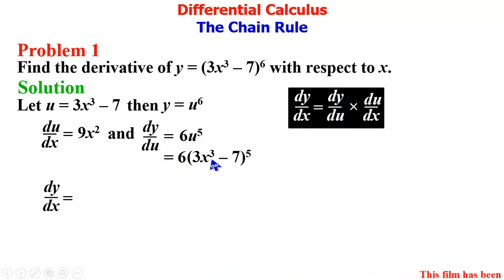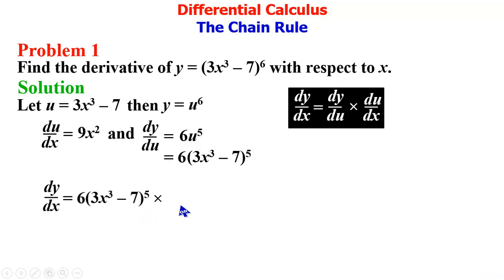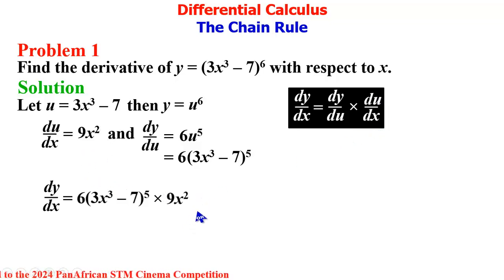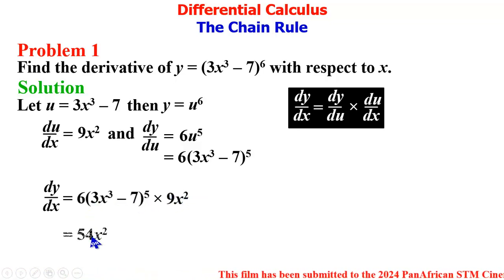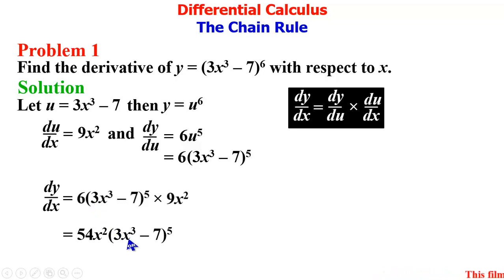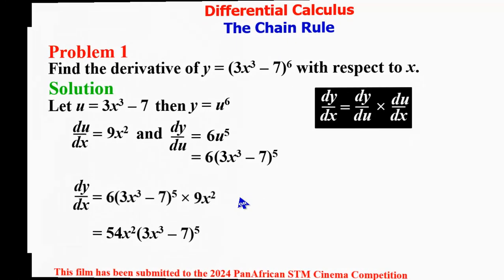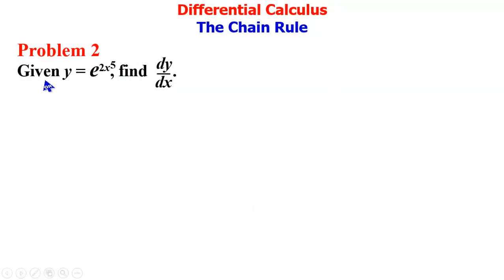Our dy/du is 6(3x³ - 7)⁵ and we multiply by du/dx which is 9x². Simplifying this, we have 9x² × 6 = 54, giving us 54x²(3x³ - 7)⁵. This is the end of the solution to Problem 1. We then go to Problem 2: y = e^(2x⁵), find dy/dx.